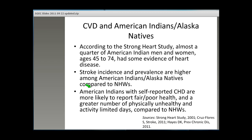Another understudied group is American Indians and Alaska Natives. There are about 360,000 American Indians or Alaska Natives over the age of 60 living in the U.S. The Strong Heart Study, one of the first studies on this group, showed that almost a quarter of American Indian men and women ages 45 to 74 had some evidence of heart disease. Similar to Hispanics and Blacks or African Americans, stroke incidence and prevalence are also higher among American Indians or Alaska Natives. Most national data groups these two populations together, which may mask heterogeneity between the groups.